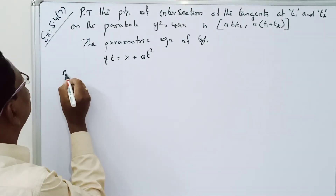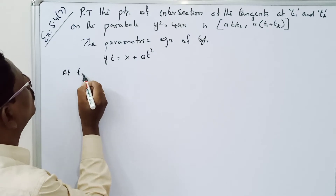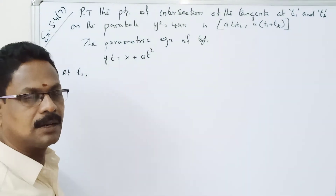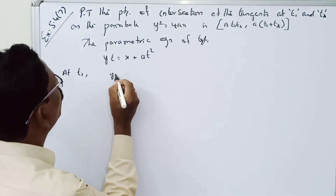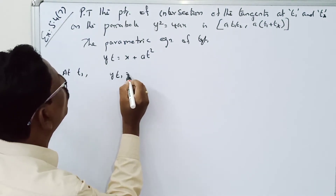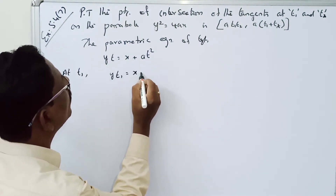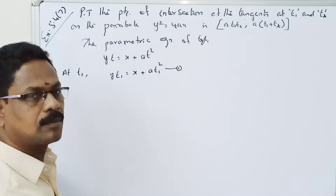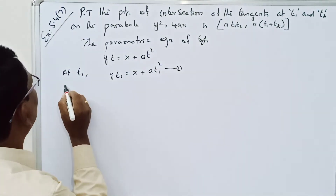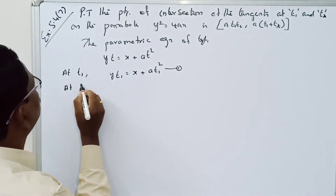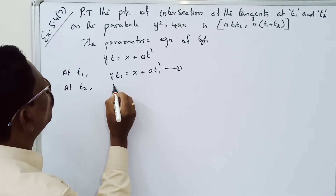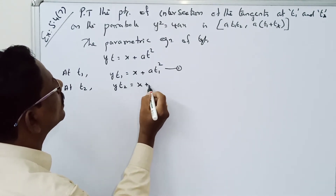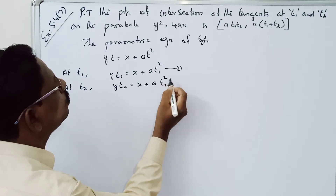At t1: yt₁ = x + at₁² — this is equation number one. At t2: yt₂ = x + at₂² — this is equation number two.